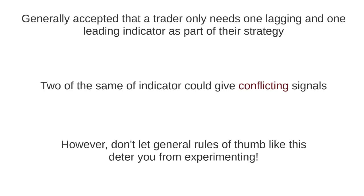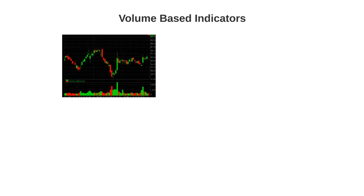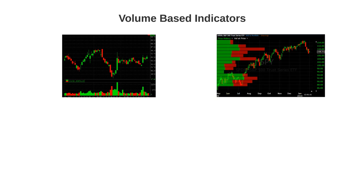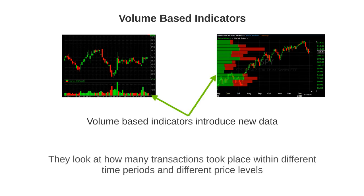There is one type of common indicator that doesn't fall into these two categories, and that's volume-based indicators. The reason volume indicators can't be classed as either lagging or leading is because they actually introduce new data into the analysis. Volume indicators look at how many transactions took place at different time periods and at different price levels — data that is not utilised by the other indicators. We'll also have a look at this type of indicator a little later on.